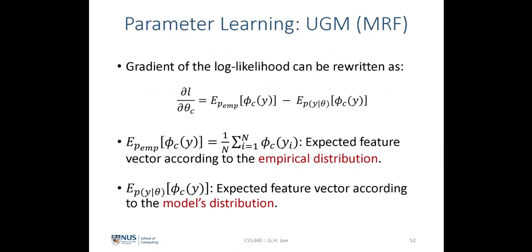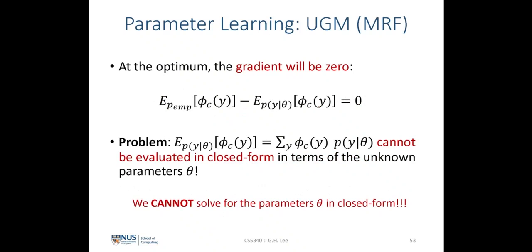Each step of the gradient of the log likelihood can be rewritten where the first term is an empirical expectation — simply the average of the clique potential over the observations, equivalent to our empirical distribution. The second term is the expected value under the model distribution. At the optimum, the gradient equals zero, meaning these two terms are equal: the empirical expectation equals the expectation under the model probability distribution.